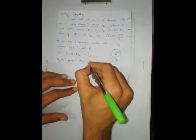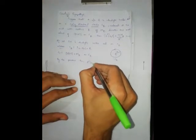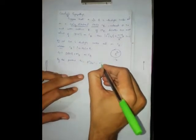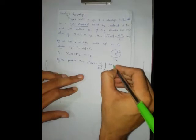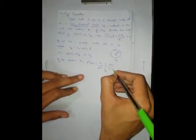By the previous theorem, that is Cauchy's extension theorem for Cauchy's integral formula, the nth derivative at z0 equals n factorial divided by 2πi, times the integral over C_R of f(z) divided by (z minus z0) to the power of n plus 1, dz.